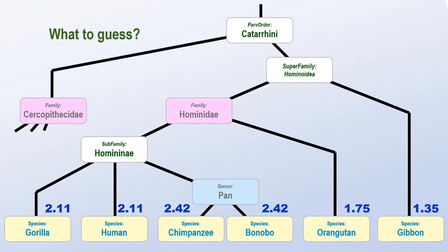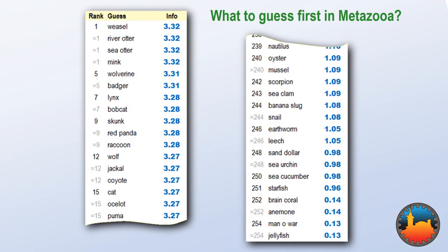That same calculation, using the complete tree, gives these values for the average information. The worst first choice would be jellyfish. The best choice for first guess would be mink, weasel, or one of the two types of otter. Once we've made that first guess, then either we've found the animal or, more likely, the tree of possible choices has been reduced by the response the game gave.